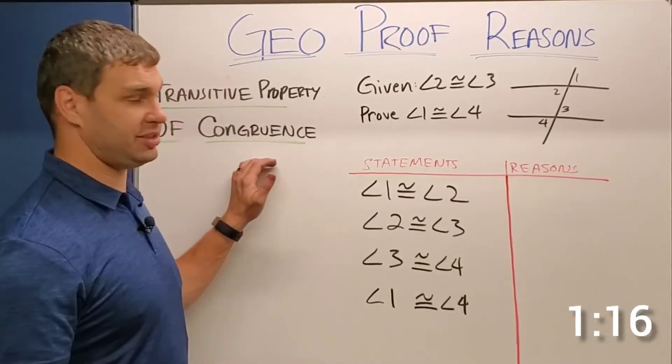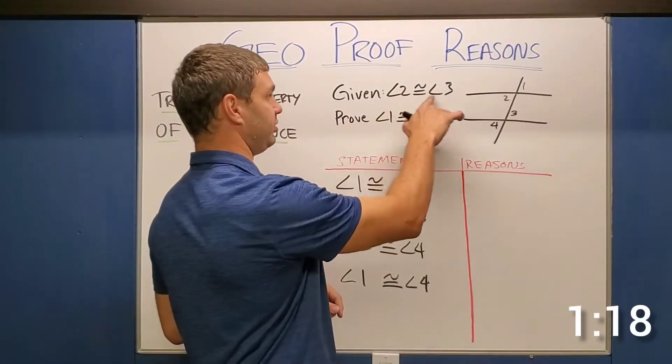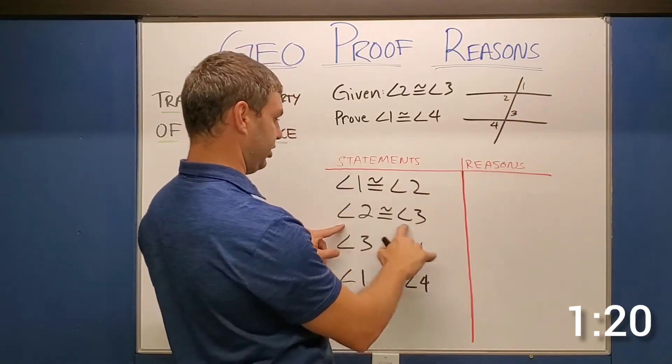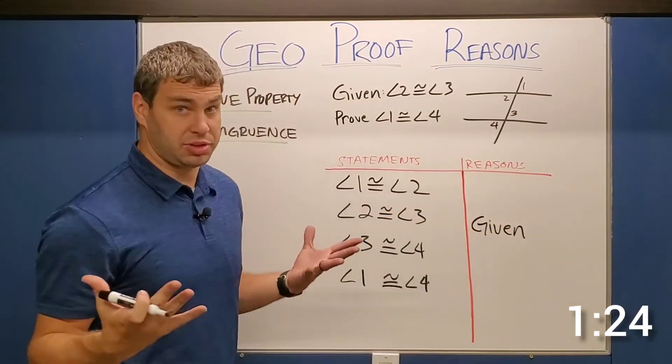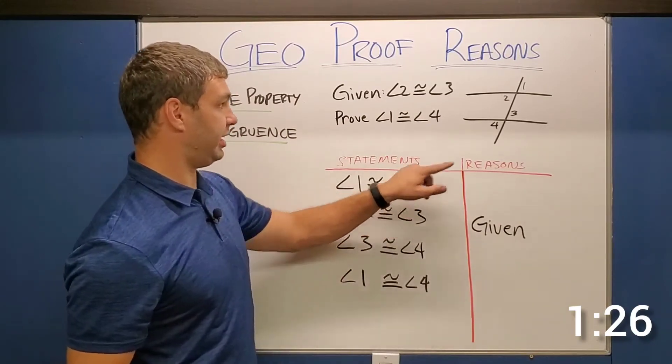Proof two. All right. Proof two on the transitive property here says we're given the angle two is congruent to angle three. All right. Which actually occurs in our second line of our proof. So a little bit strange. Okay. So what's our first line? Our first line angle one is congruent to angle two.